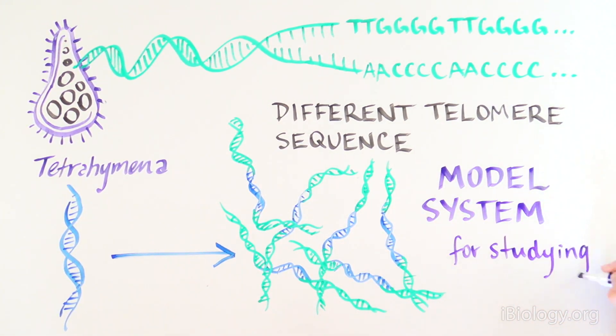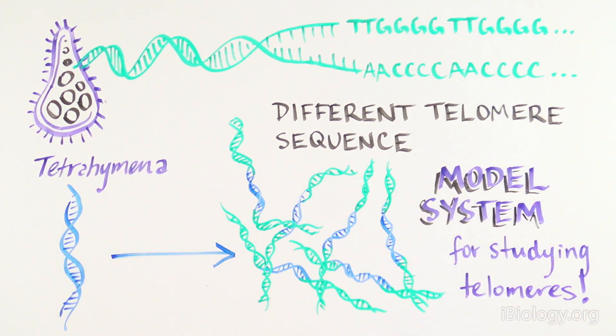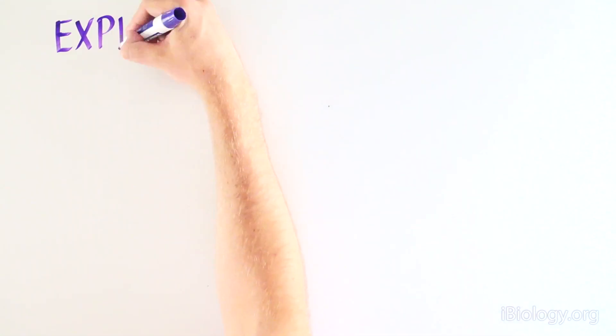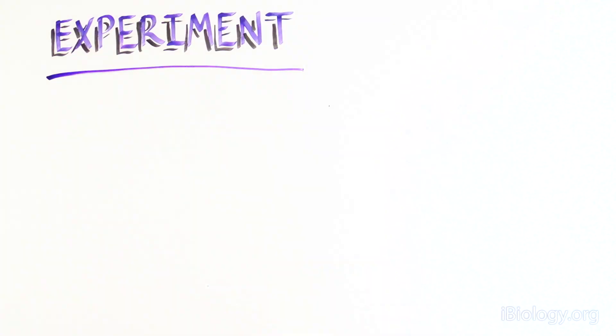So this was a great system to study how telomeres are established and maintained, since it seemed to happen rapidly and synchronously in tetrahymena, unlike in other organisms. Specifically, these scientists wanted to find out if there was a factor that added telomeres onto DNA in tetrahymena nuclei.